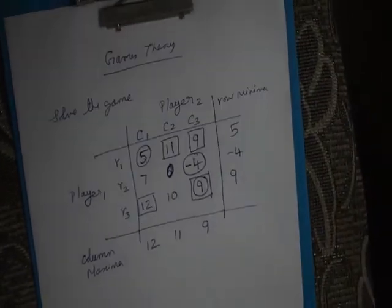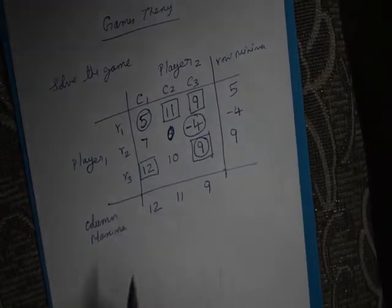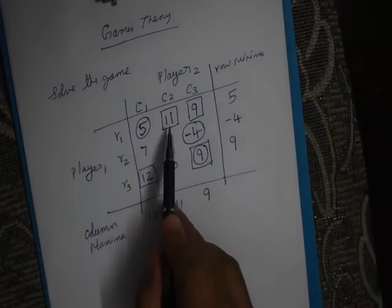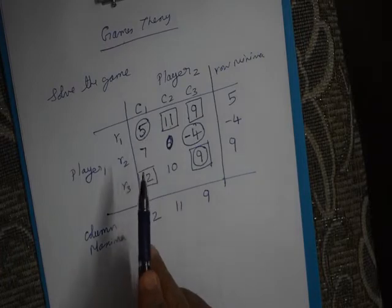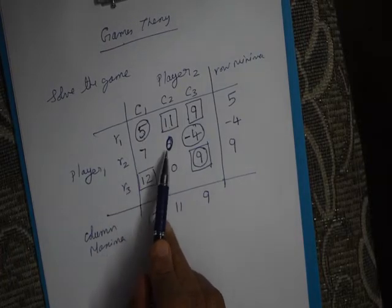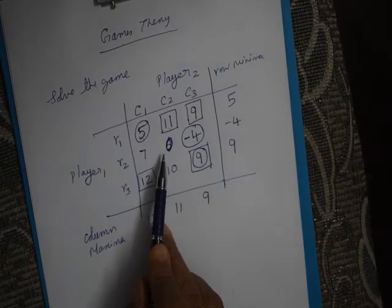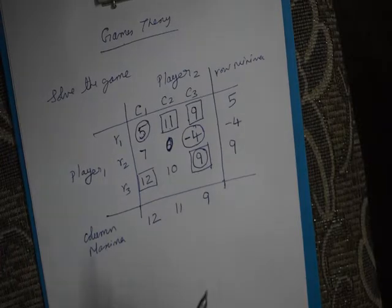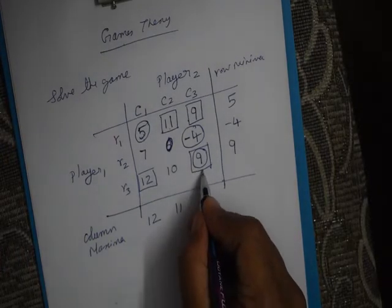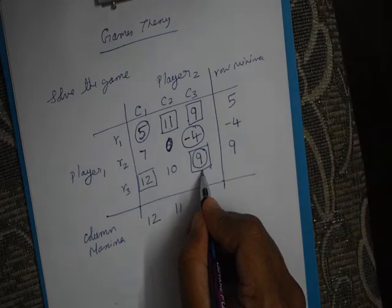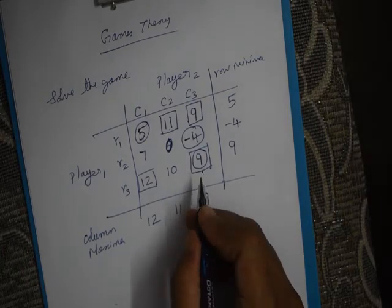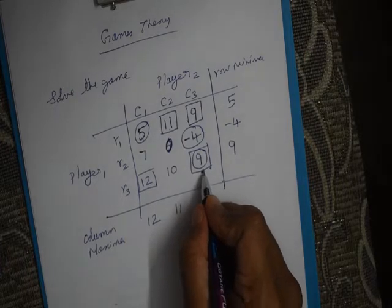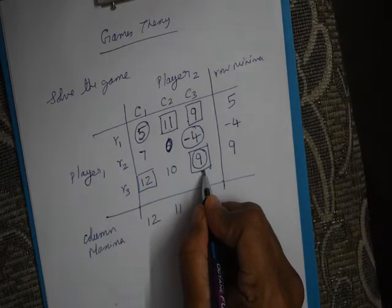Once the column maxima is identified, you can find in the matrix cells that have only a square, only a circle, or neither. There is one peculiar cell where there is both a circle and a square — this is where the game is solved. This point is called the saddle point. As the saddle point is arrived, the game is solved, and the players adopt pure strategy.